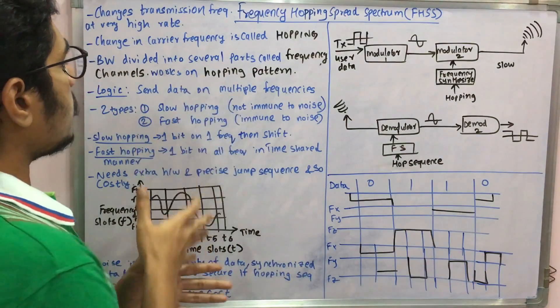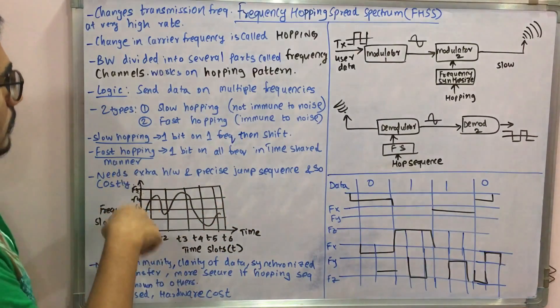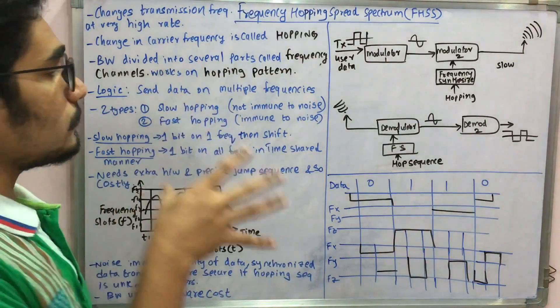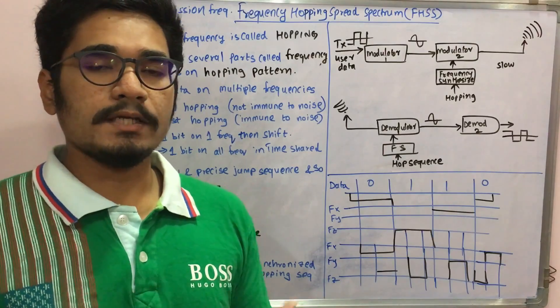several parts called frequency channels like f1, f2, f3, f4, f5, like you see in this. It works on a pattern called the hopping pattern or pseudo random pattern. This pattern is generally some encryption